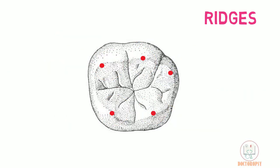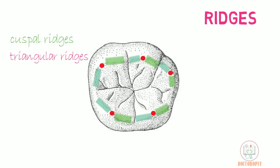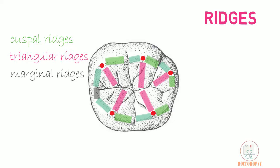There are numerous ridges in the mandibular first molar. Starting with the cuspal ridges, each cusp has two cuspal ridges — one mesial cuspal ridge and one distal cuspal ridge. Five triangular ridges, one for each cusp, are seen running from the cusp tip towards the center. Two marginal ridges are present: the mesial marginal ridge at the mesial outline and the distal marginal ridge at the distal outline.